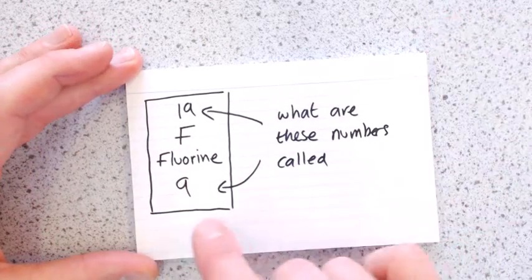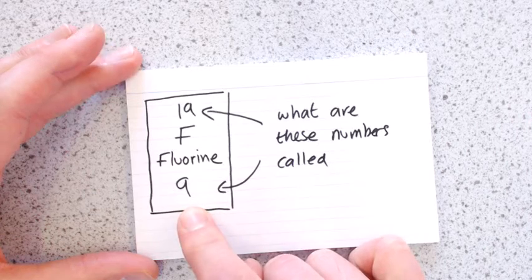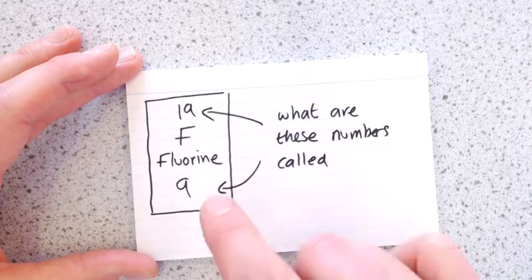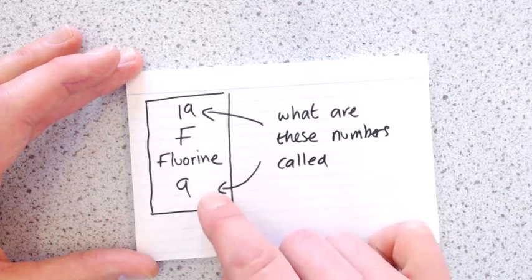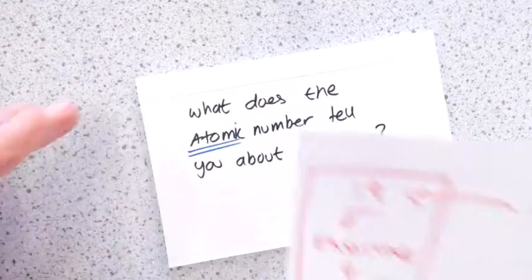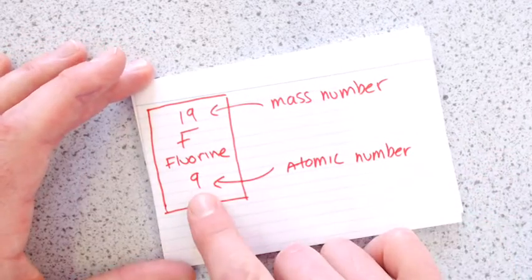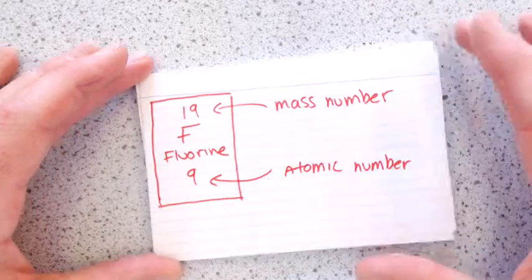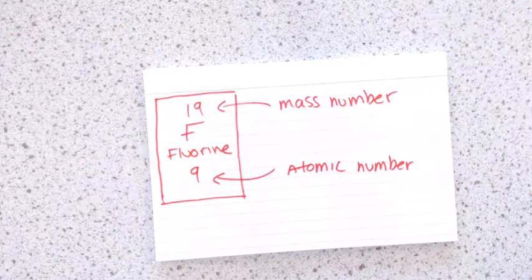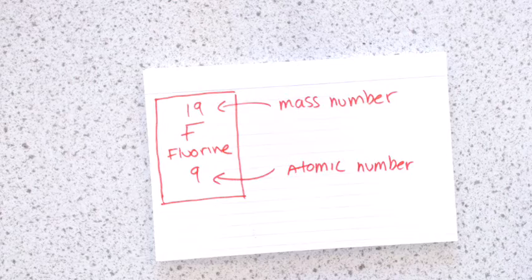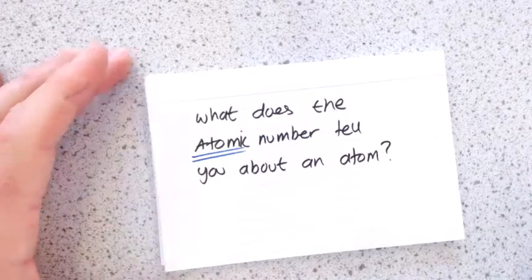Next, if you see an element in the periodic table, there's two numbers, the top number and the bottom number. What are these called? Bottom number is the atomic number, top number is the mass number. If in doubt, in the exam, there's a little key on your periodic table that tells you that. It's worth remembering.